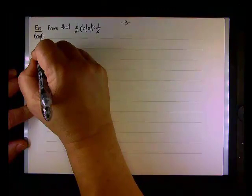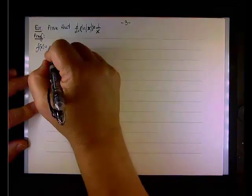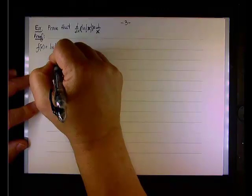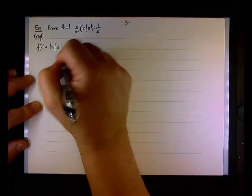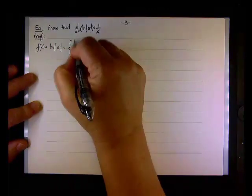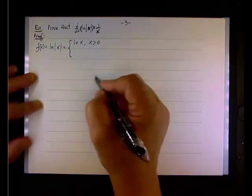The absolute value of x is really a piecewise function, so we can express it like so. F of x, being the natural log of absolute value of x, is broken into two pieces. It would be the natural log of x if x is positive.